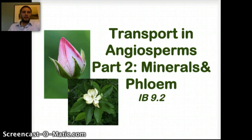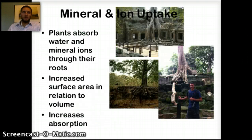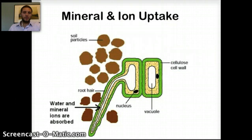This is our last video of the plant topic, and in this video we're going to look at transport in angiosperms. This is part two, where we look specifically at minerals and primarily the transport of sugars — sucrose via the phloem — and this is IB section 9.2. Going back to our previous video, we talked about how minerals and ions are absorbed through the root structure, and root hairs protrude into the soil to absorb minerals and ions. We're going to focus on how sucrose specifically gets moved throughout the plant.